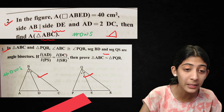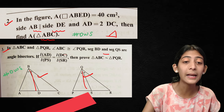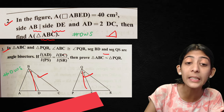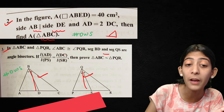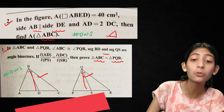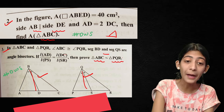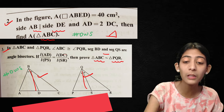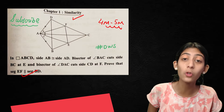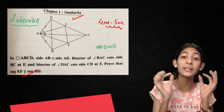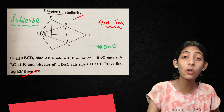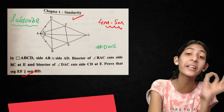Third question: If length of AB upon length of PC is equal to length of DC upon length of SR, then prove that triangle ABC is similar to triangle PQR. If you want a solution, please comment on the video and you will get a full explanation.